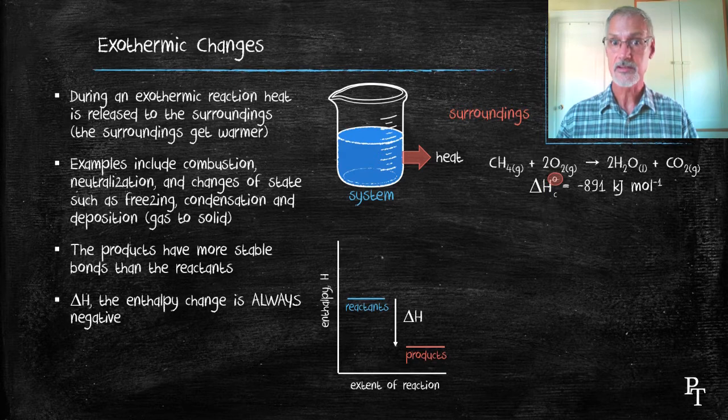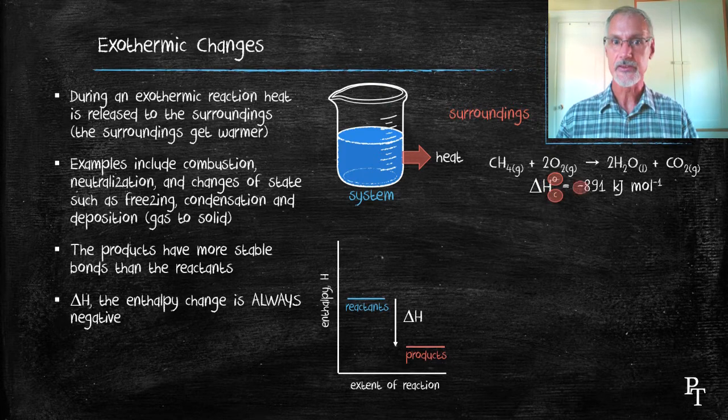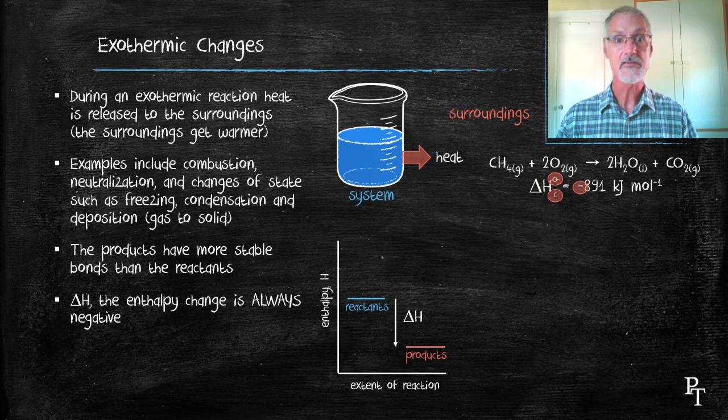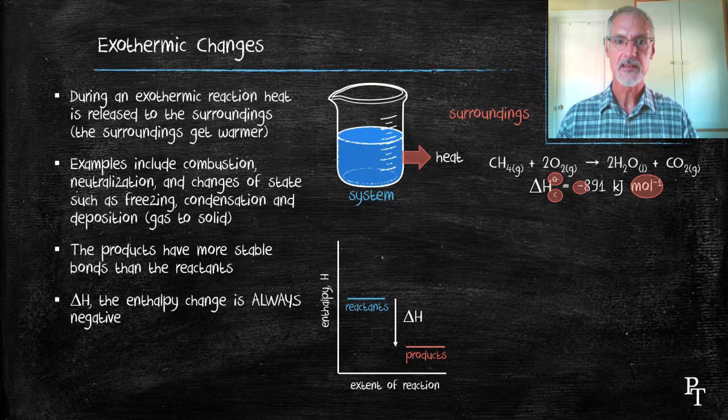First of all, I see it was done at standard conditions, 100 kilopascals and 25 degrees Celsius. C is telling me it's a combustion reaction. The negative sign that's here is telling me that this is an exothermic reaction, one that releases heat. And finally here, per mole. This refers to per mole of fuel. One mole of fuel will release 891 kilojoules of energy.